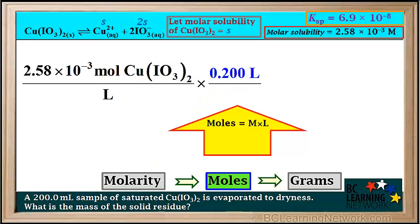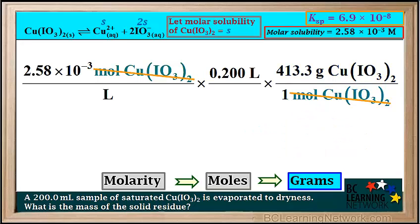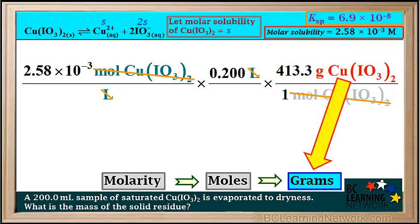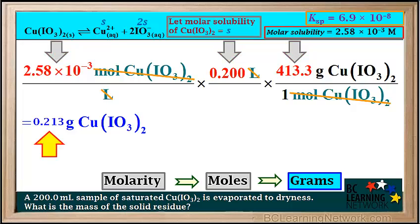We also multiply by another conversion factor to go directly to grams: the molar mass of Cu(IO₃)₂. By adding up the atomic masses on the periodic table, we get 413.3 grams per mole. The moles of Cu(IO₃)₂ and liters cancel out, leaving us with grams of Cu(IO₃)₂. Multiplying 2.58 × 10⁻³ × 0.2 × 413.3 gives 0.213 grams.